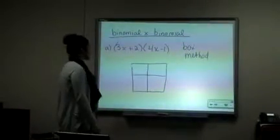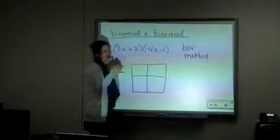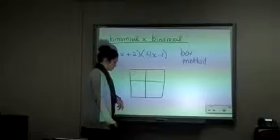Alright, binomial times binomial. So as you can see, we have a binomial times a binomial. These two brackets cut all together mean a multiplication, and we have two terms times two other terms.